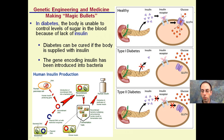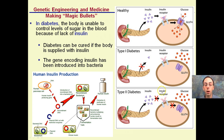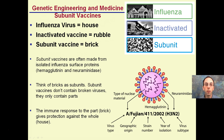As a refresher, Type 2 diabetes is where insulin is produced but the body lacks an insulin receptor. So that's a slightly different case — just adding more insulin won't necessarily fix the problem because the issue is with the receptor.